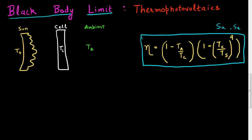In this expression, there is an ambient temperature term, which I know to be 300 Kelvin, and the temperature of the sun, which I know to be 6000 Kelvin. So these two are known quantities. But it also has the temperature of the cell, TC. As I increase the temperature of the cell, the term (1 minus TA divided by TC) will increase.